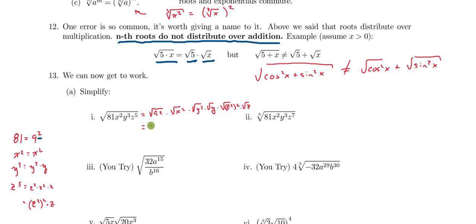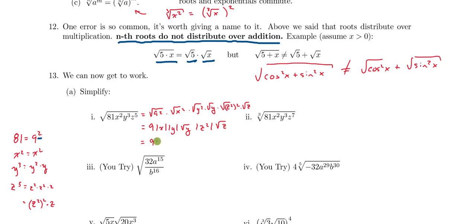The square root of 9 squared just simplifies to 9. The square root of x squared — careful here — since I didn't assume the variables were positive, I need the absolute value of x. Here I have the square root of y squared, which is the absolute value of y, and then the square root of y remains. The square root of z squared squared simplifies to the absolute value of z squared, and then there's a square root of z.